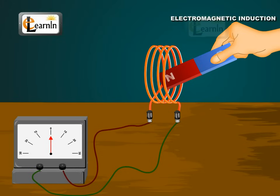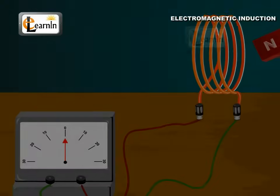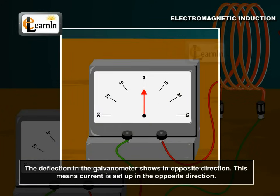Now, move the magnet away from the coil. The galvanometer shows again a deflection but in the opposite direction. This means current is set up in the opposite direction.